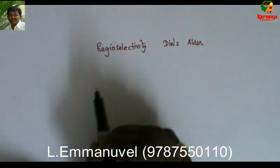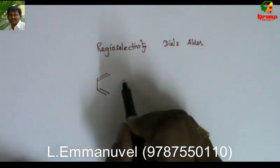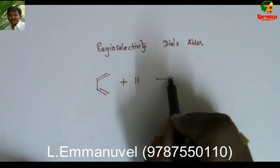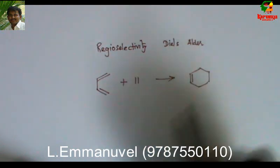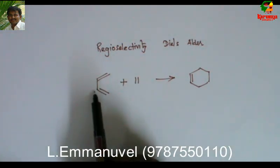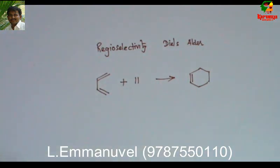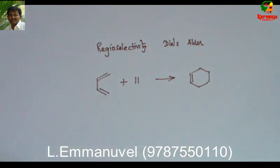What is regioselectivity? When it is a simple cyclohexene, there is no substitution in the diene or dienophile, so there is no question of regioselectivity. But when there is a substituent in both the diene and the dienophile, there will be two possibilities.